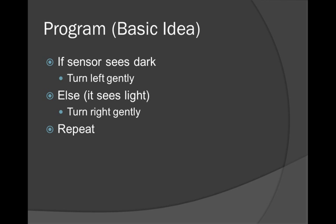So here's the basic idea of the program. If the sensor sees a dark color, you're going to turn left gently. And if it sees a light color, which is the other case, it's either going to see dark or light. If it sees light, you're going to turn right gently. And you keep repeating that as many times as you can, several hundred times a second. And computers are good at doing things very fast and very repetitively. So this is a perfect task for a computer.